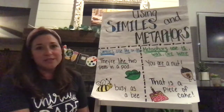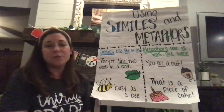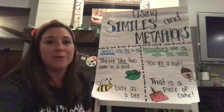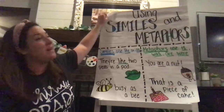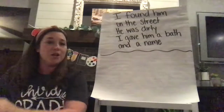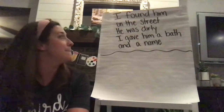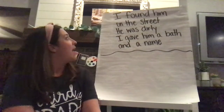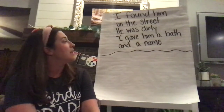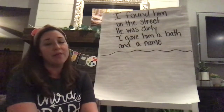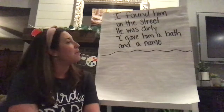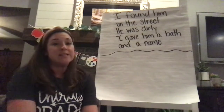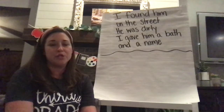So as you're writing your poetry today, I want you to try to revise and add using similes, metaphors, and your imagery words. I want to leave you with one example that we can do together before you go off on your own. This is what I wrote today about my dog: I found him on the street. He was dirty. I gave him a bath and a name. I'd like to revise this and add some imagery — maybe even a simile or a metaphor — to really paint a better picture for my readers.